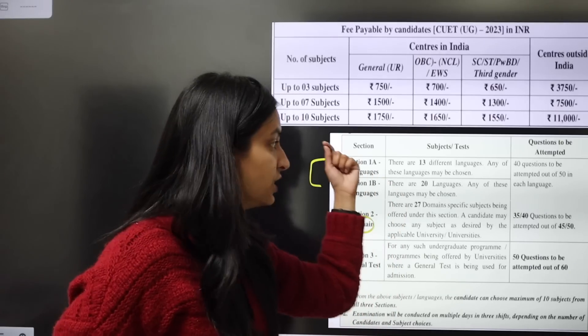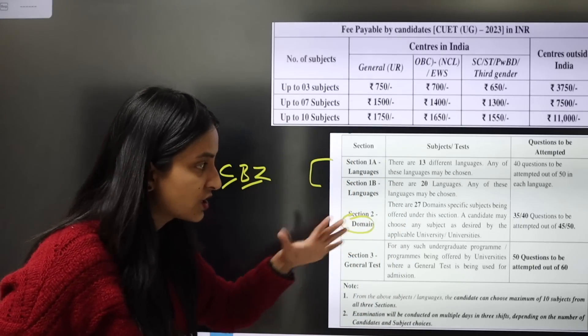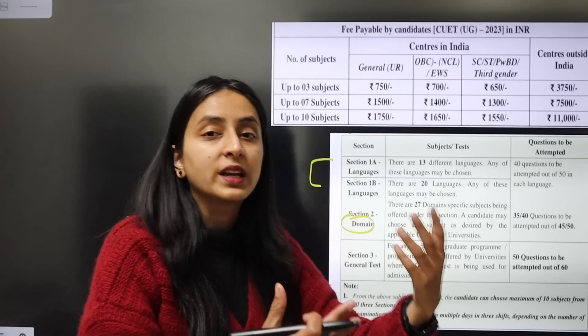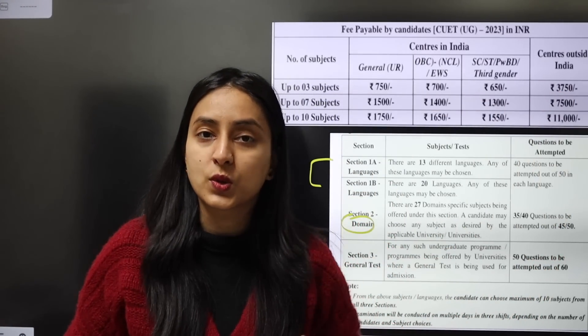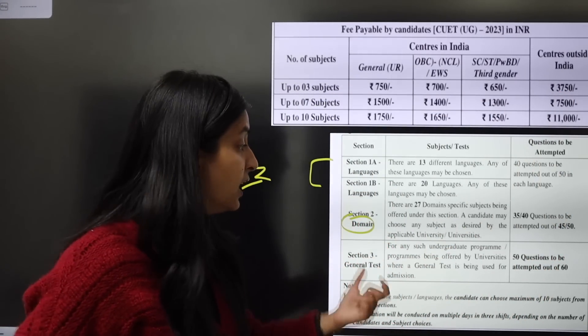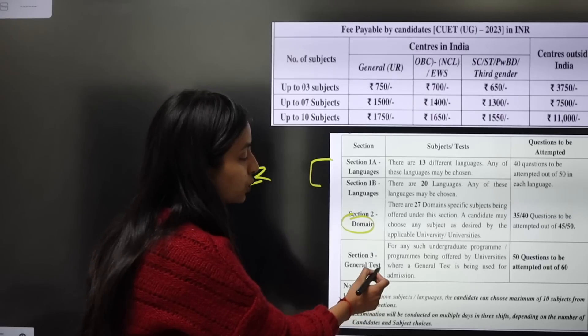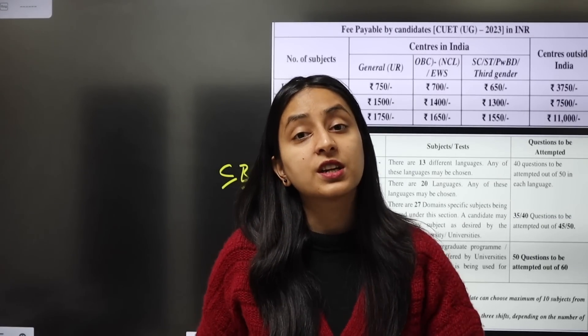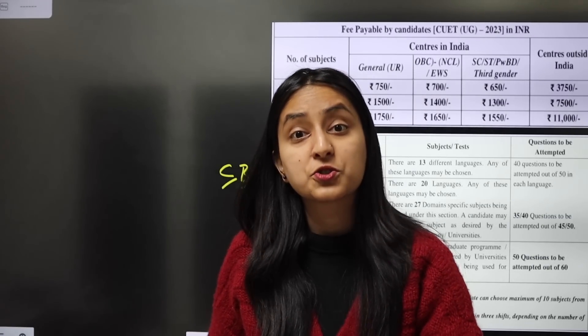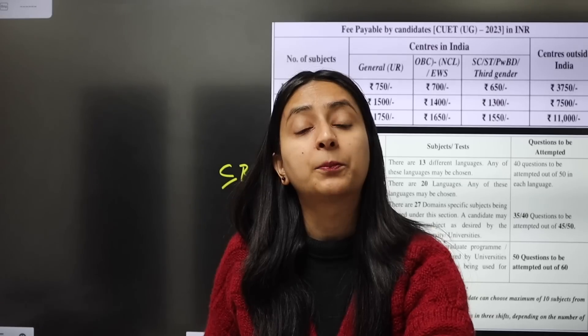The syllabus will be asked from those subjects for the central university you are targeting. The third section is the general test section, where questions are asked from current affairs, GK, general aptitude, and reasoning.